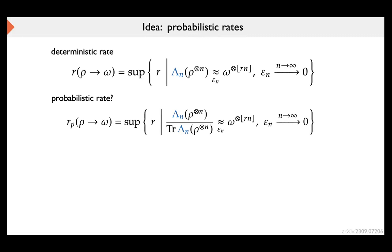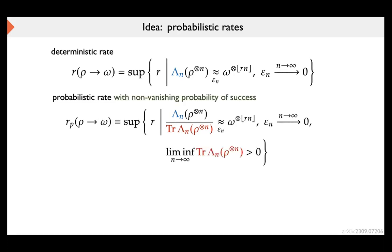One way to define a rate in this context is: conditioned on the success of a protocol, if this probabilistic map succeeds, you get the desired state ω — and this happens with some probability. However, there is an issue: the probability of success is completely unconstrained, so in an asymptotic protocol, it could vanish exponentially fast, preventing any meaningful realization. So the idea is to constrain the probability of success: we consider only probabilistic rates where the probability of success is bounded away from zero — even when manipulating unbounded amounts of states, the probability of success must remain larger than some non-zero constant.